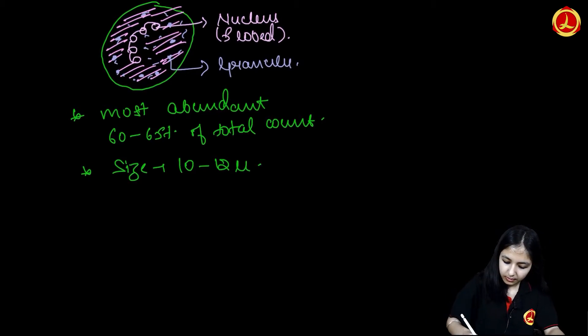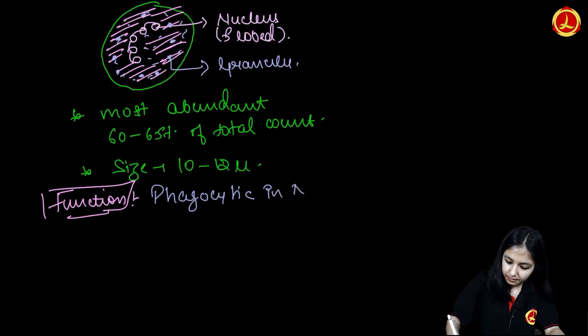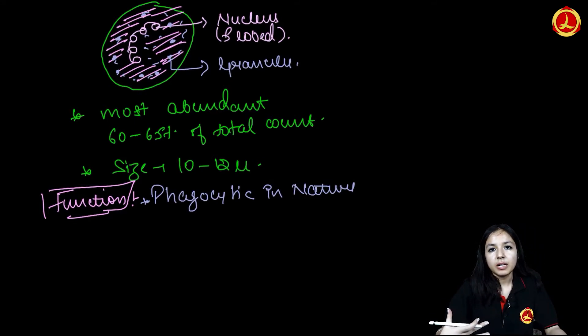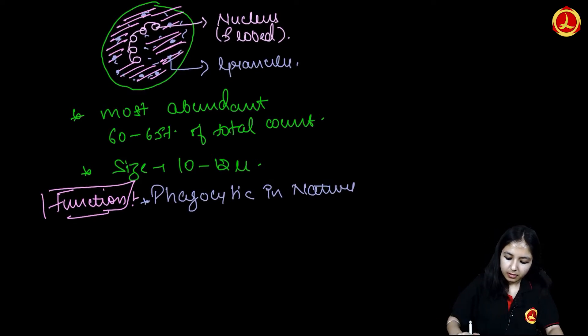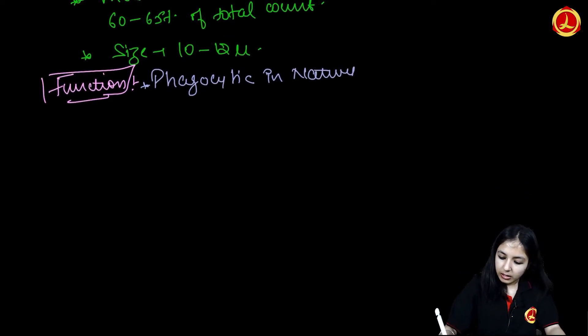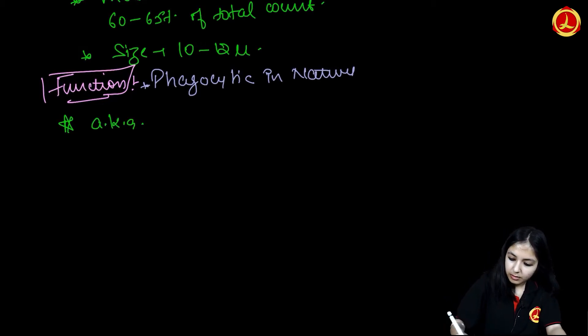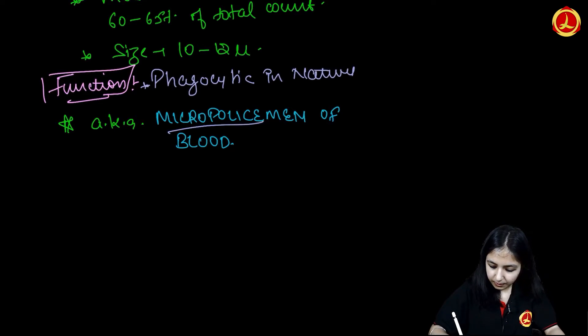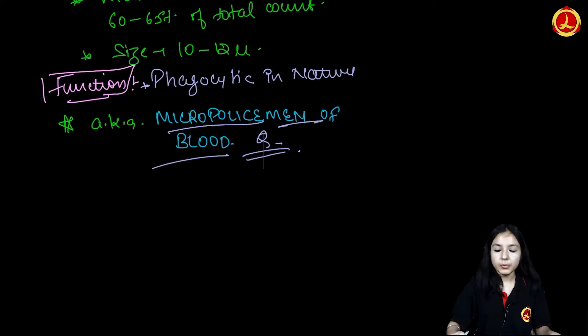Now coming to function, they are phagocytic in nature. Phagocytic in nature means whenever any bacterial virus comes inside our body, neutrophils are activated. They identify that bacteria or the virus and they destroy them by engulfing them through the process of phagocytosis. These are also known as micropulismen of blood. This was all about neutrophils.